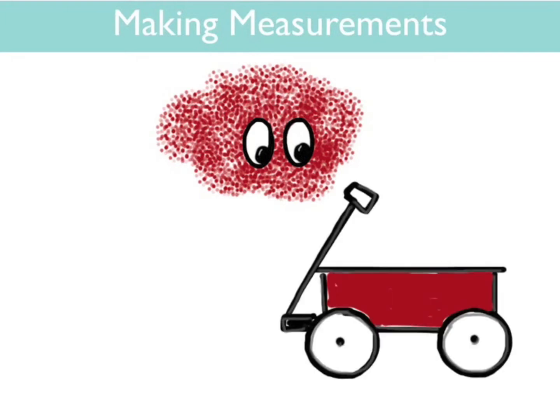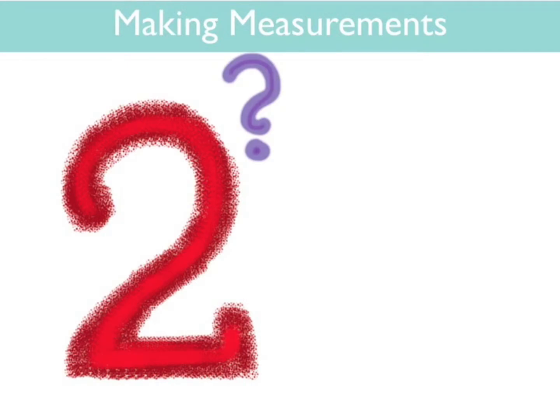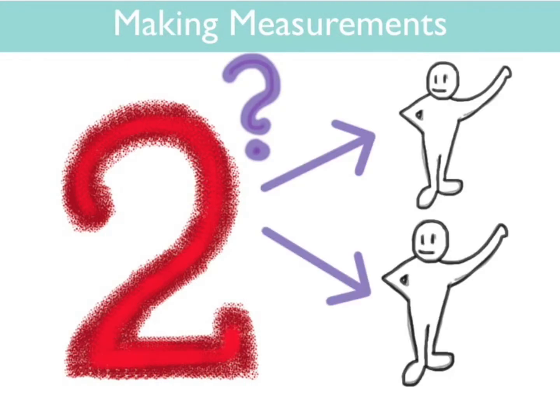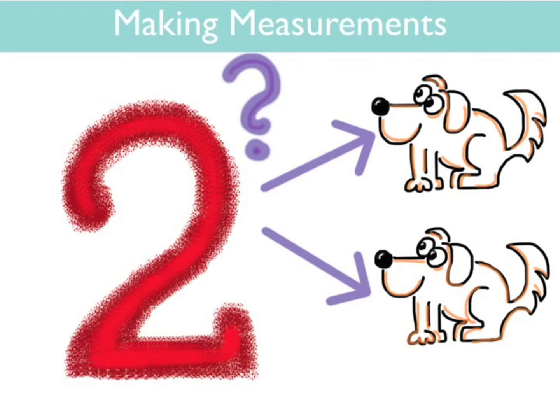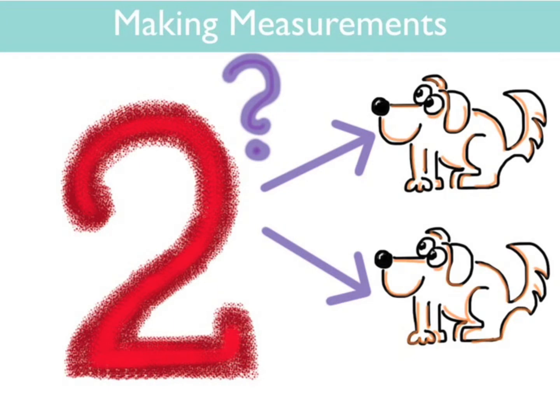Now imagine the number two in your mind. You probably are seeing the symbol for the number, something like this. But if I tell you to imagine two people or two dogs, the number kind disappears. It's now a quantity of people or dogs.